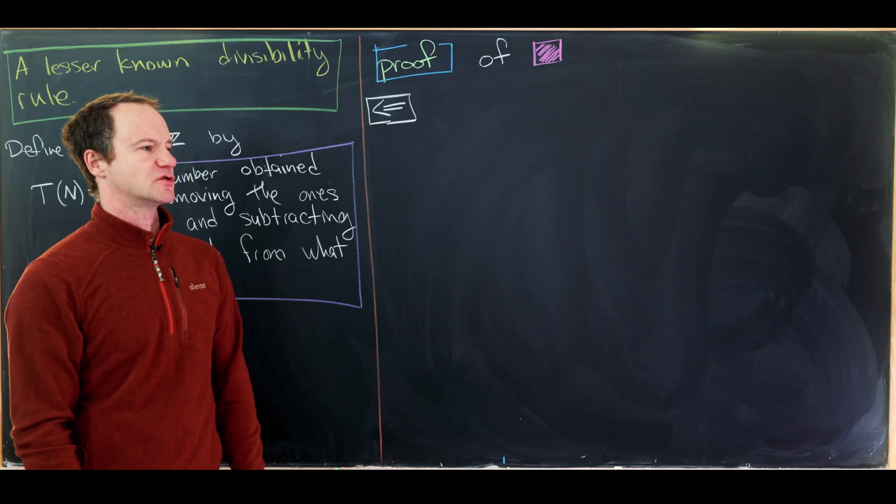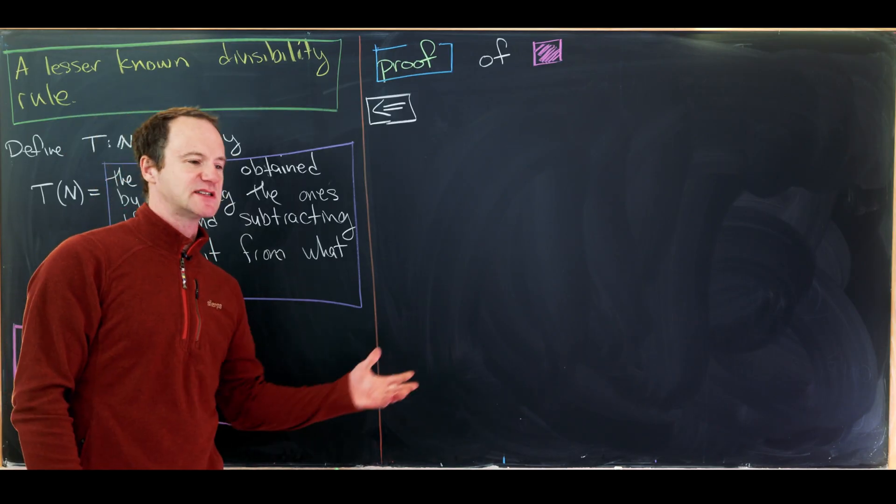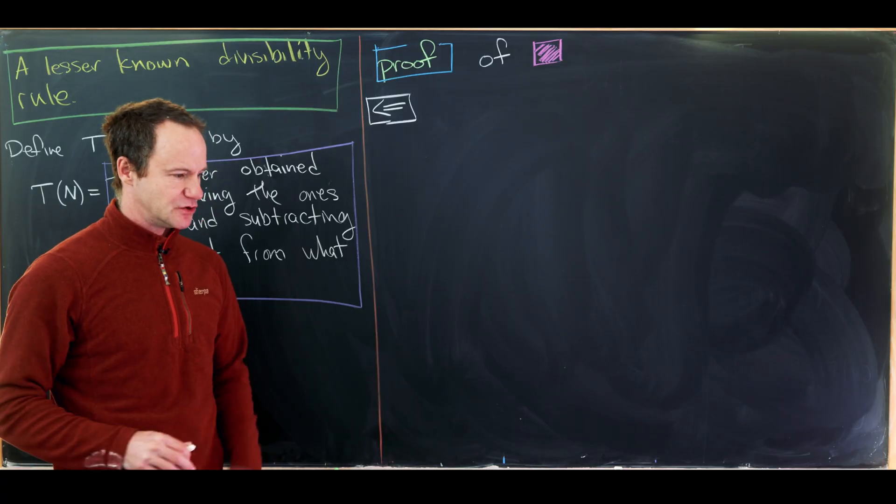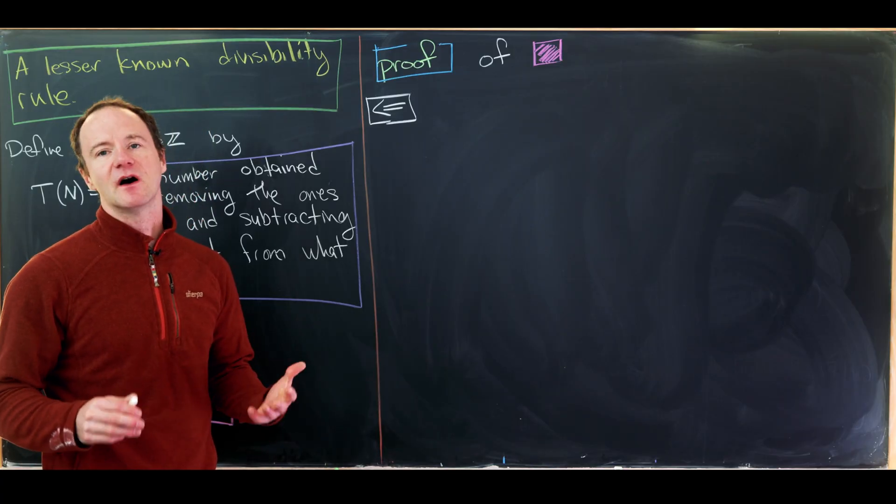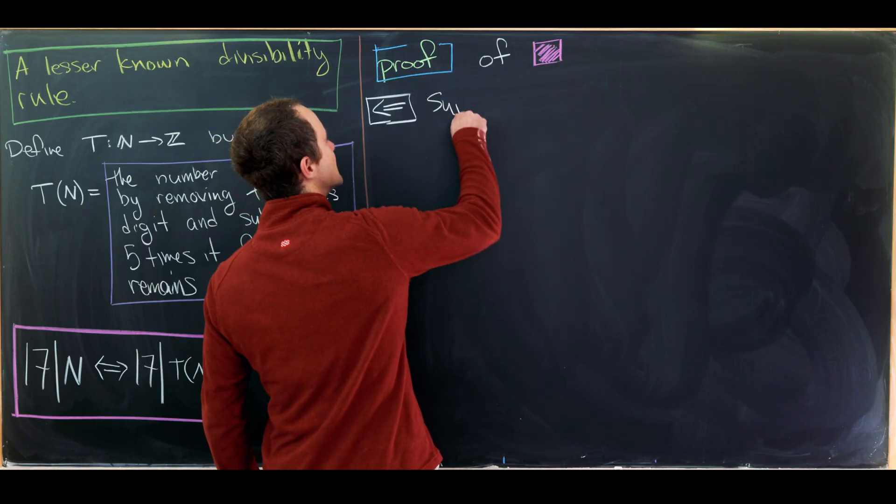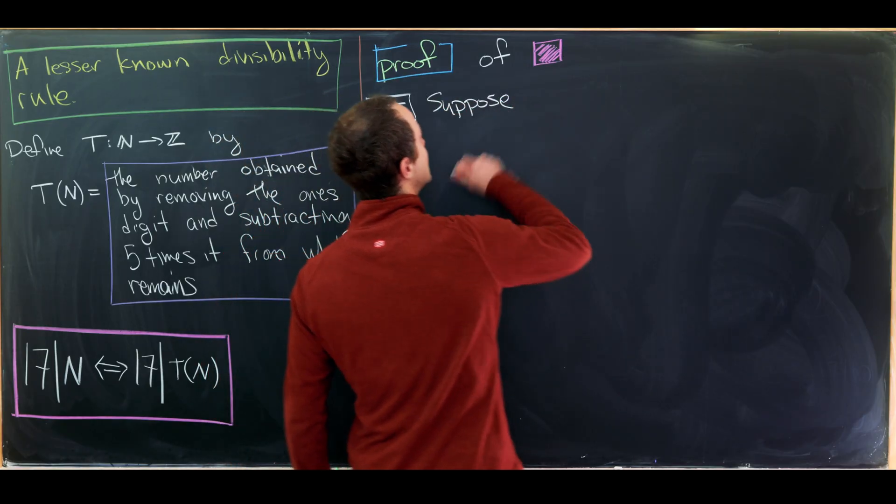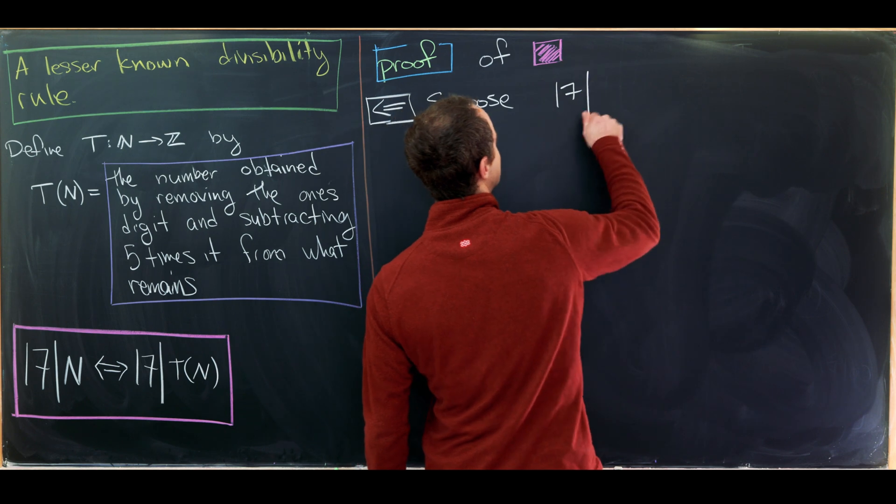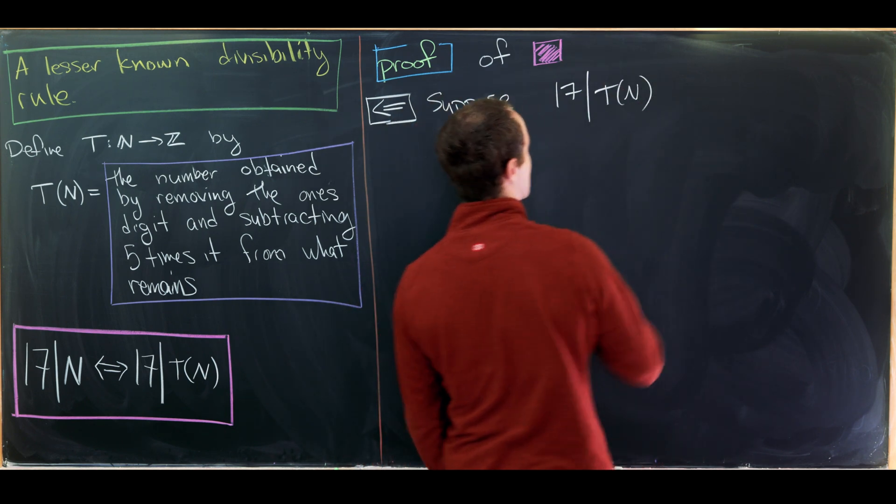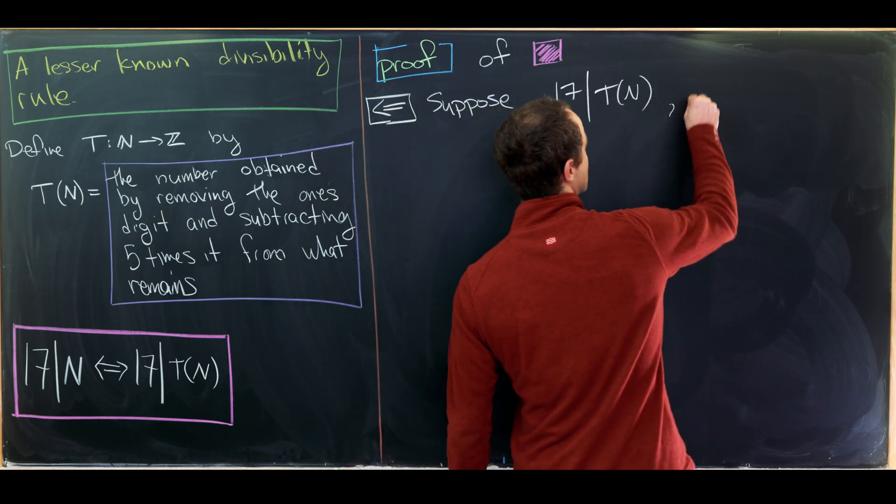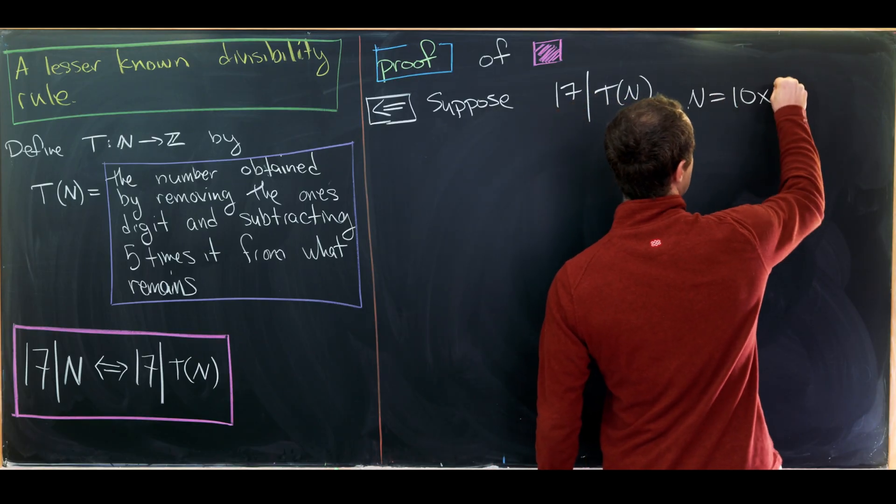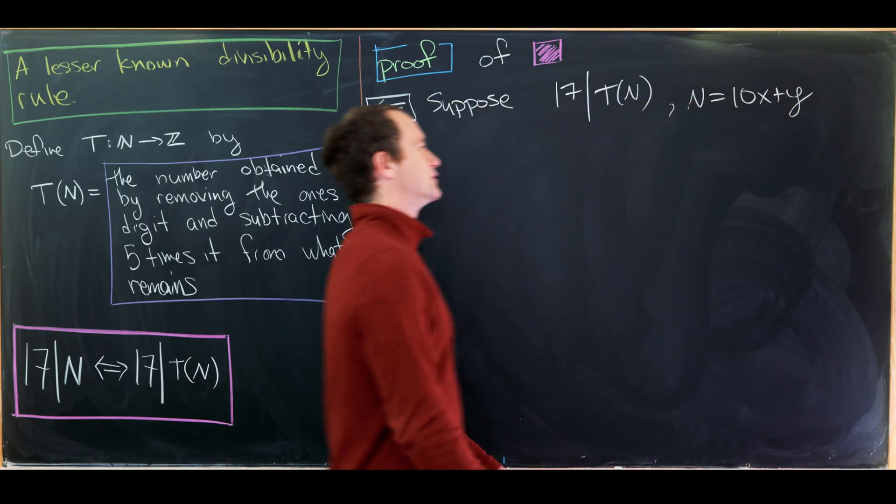So now let's work through the reverse direction. And this is going to go essentially the same. One of the steps that we do will be a little bit different, but the heart is still there. So let's maybe suppose that 17 divides T(n). And we'll also write n as 10x plus y, just as we did before.